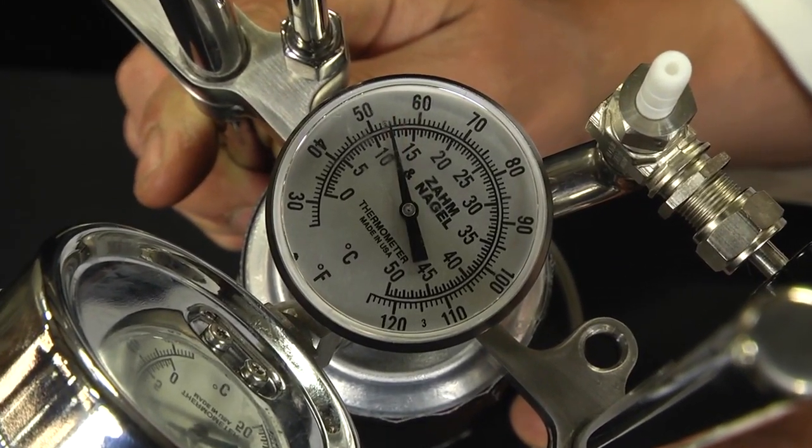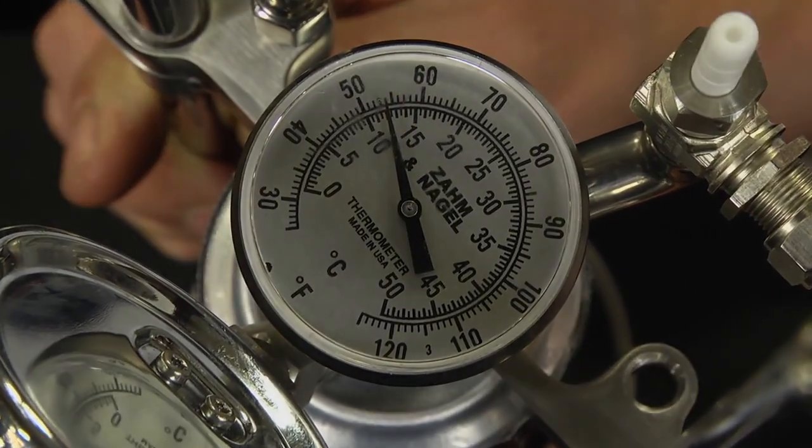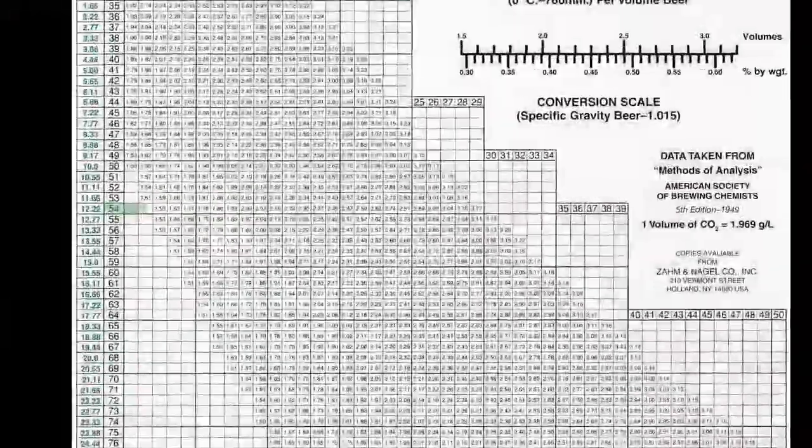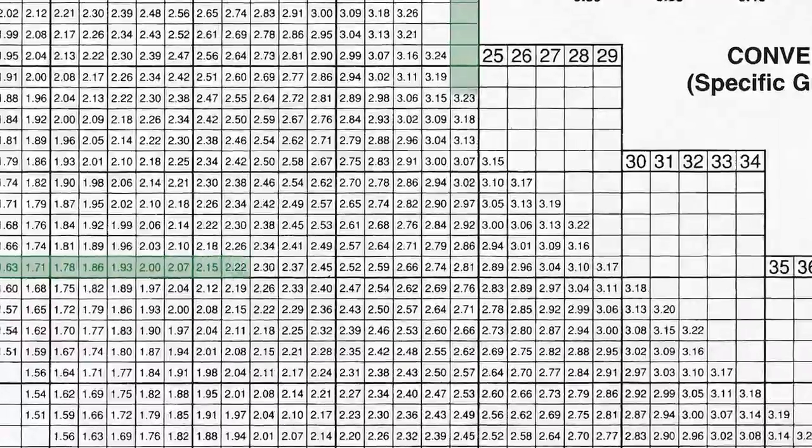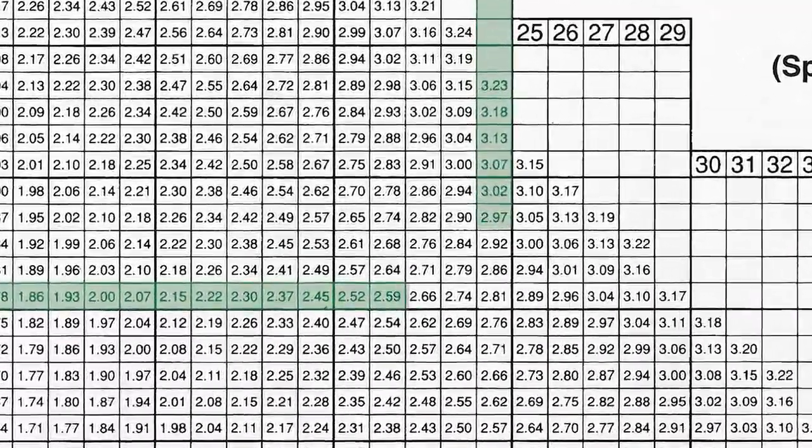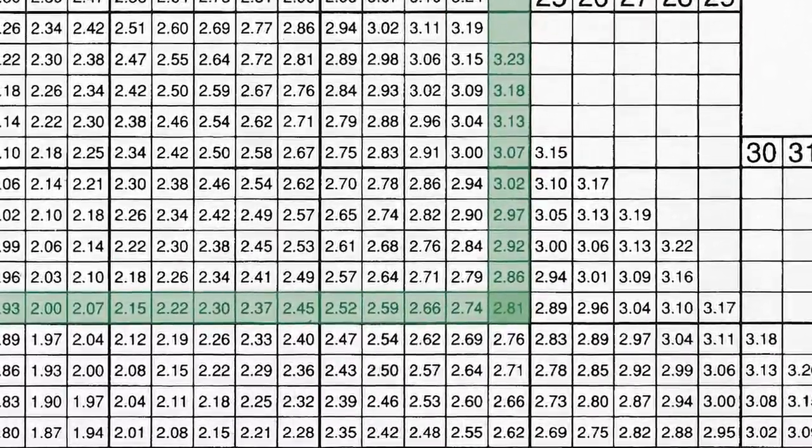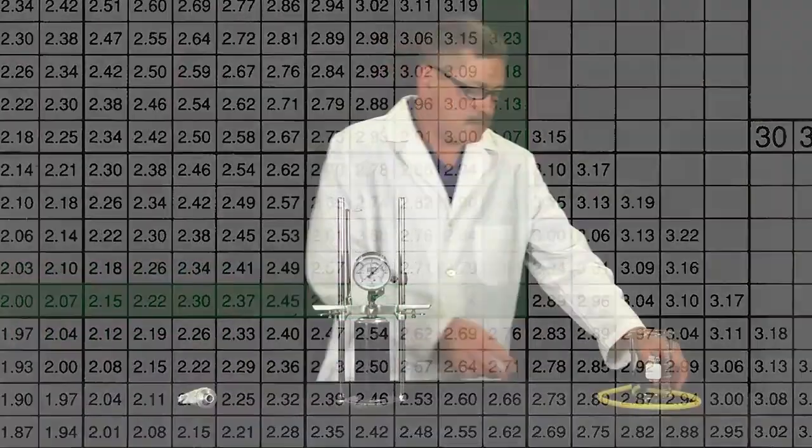Caution! Do not record the pressure at this point as there will be a false reading. With the pressure and temperature recorded, refer to the correct relationship chart to determine the volume of CO2 gas. Charts are available for both alcoholic and non-alcoholic beverages.